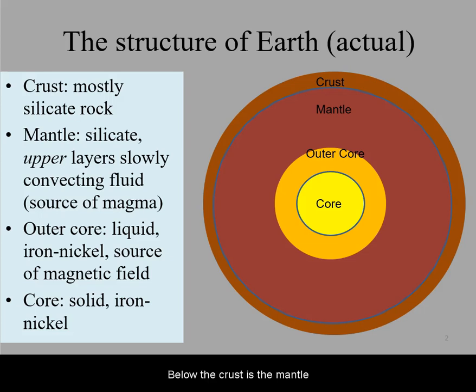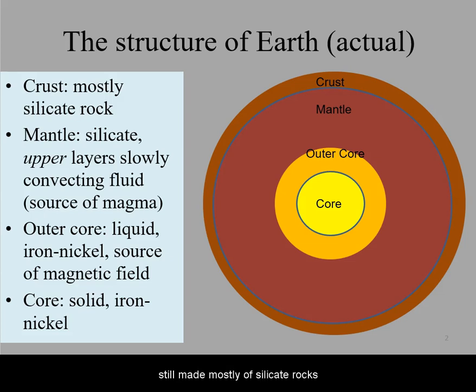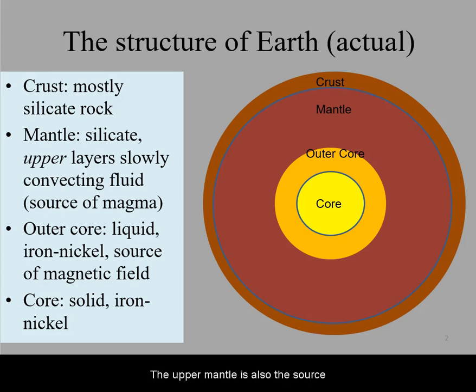Below the crust is the mantle. The mantle is a little more malleable than the crust, still made mostly of silicate rocks, but is a bit denser. The upper mantle is also the source of magma that erupts as lava on the surface in volcanism.